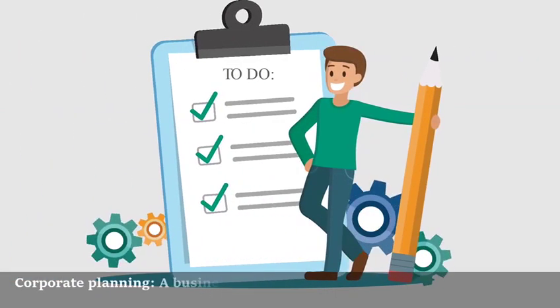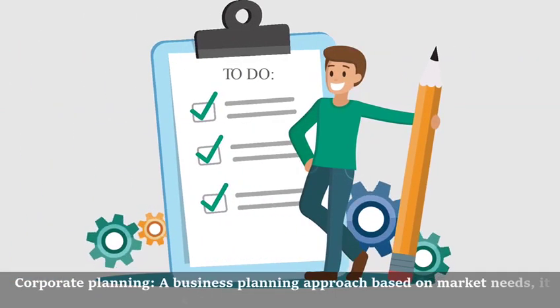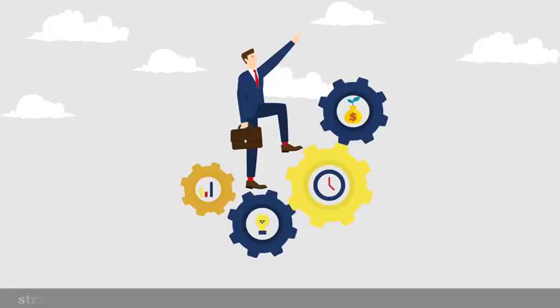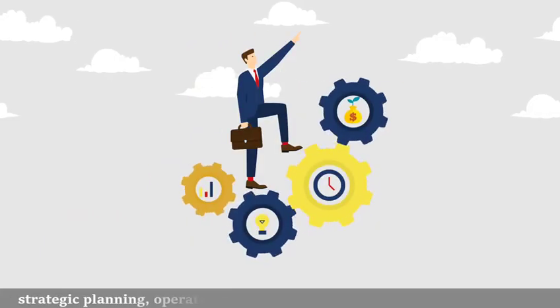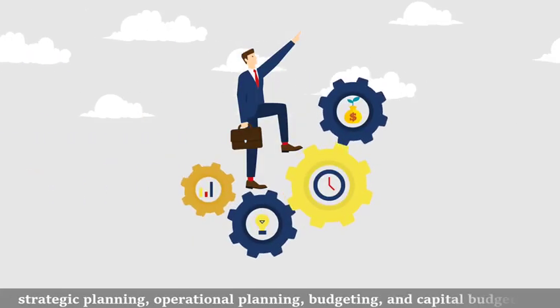Corporate planning is a business planning approach based on market needs. It consists of four major stages: strategic planning, operational planning, budgeting, and capital budgeting.